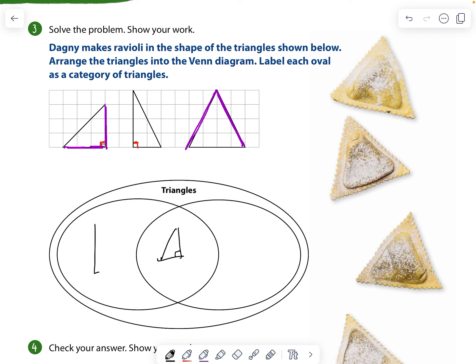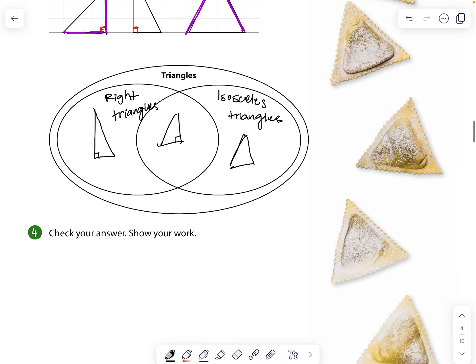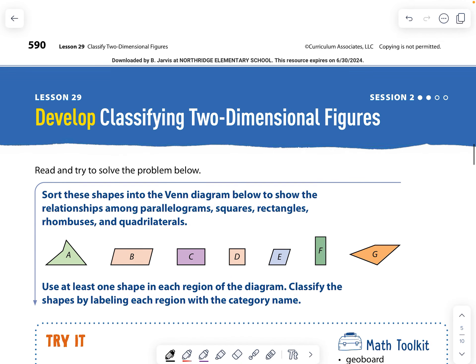And I can name this right triangles because they have right angles and I can name this one isosceles because two of the sides are the same length. Okay. Let's go on to the next one.